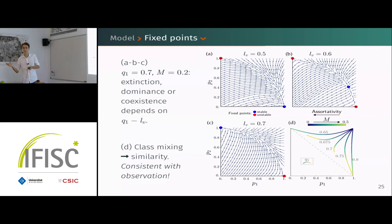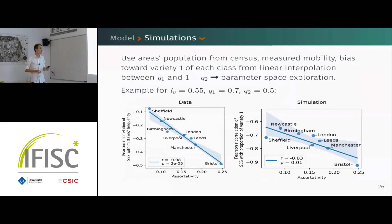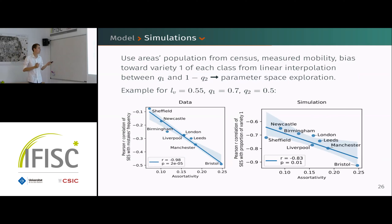If we want something more complex — doing simulations with real population from the census and measured mobility — we consider five classes instead of two. To limit phase space exploration to just three parameters, we take q_1 and q_2 and a linear interpolation between them to get the variety preference of each class. On the left, what we had in the data; on the right, one example simulation.